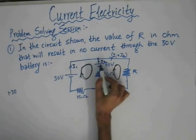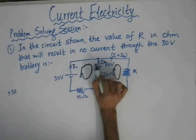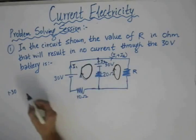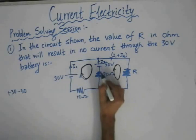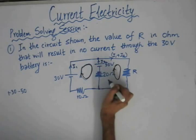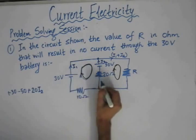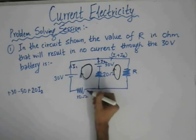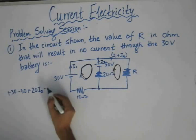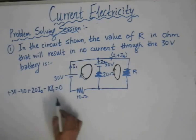The second element encountered is a cell of EMF 50 volts. For this cell, we are moving from the positive terminal to the negative terminal, so the EMF is negative: minus 50. For the 20 Ohm resistor, current I2 is in the upward direction and we are moving downward, so the potential drop is positive: plus 20·I2. For the 10 Ohm resistor, current I1 flows in the same direction as the loop, giving a drop of 10·I1. This equals zero.